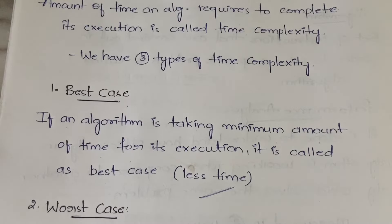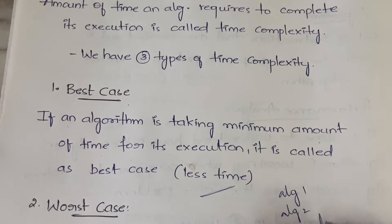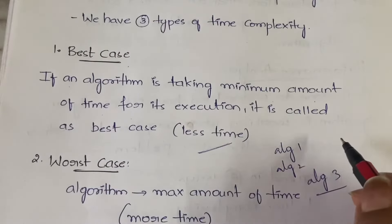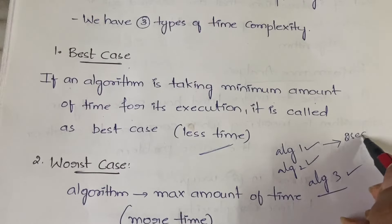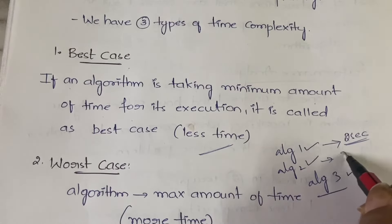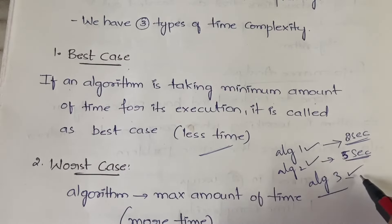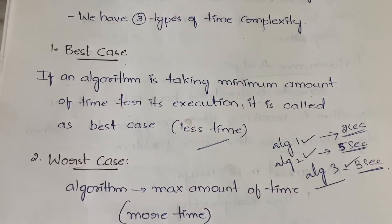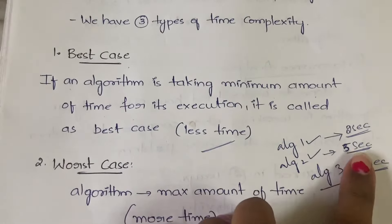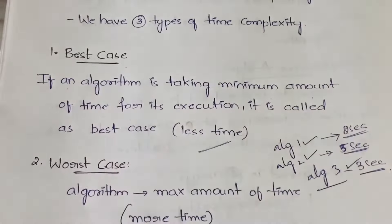To be more clear — suppose you have Algorithm 1, Algorithm 2, and Algorithm 3, all designed for the same purpose: addition. Algorithm 1 takes 2 seconds, Algorithm 2 takes 5 seconds, and Algorithm 3 takes 3 seconds. Among these three, Algorithm 1 takes the minimum amount of time, so it comes under the best case.